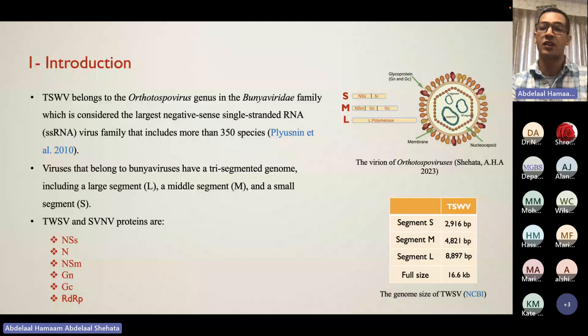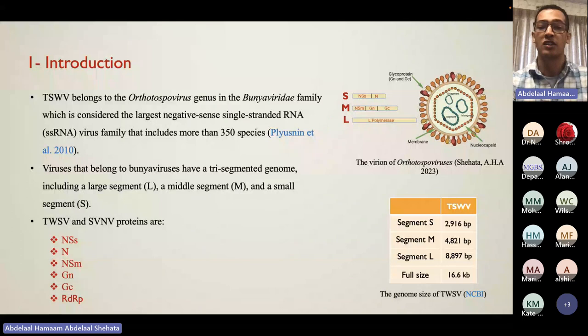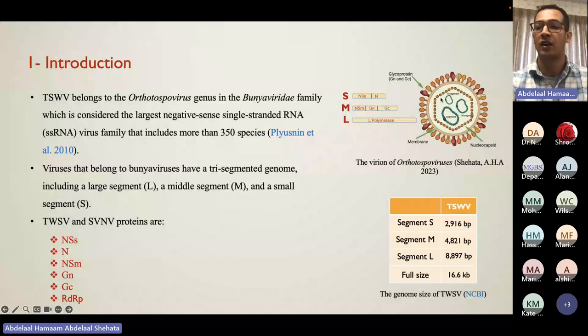This family is the biggest single-stranded RNA family, with over 350 species. The virus is composed of three segments — it's called tripartite: the small segment, the medium segment, and the large segment. The small segment has two genes: the first is the non-structural RNA silencing suppressor protein, which helps the virus suppress RNA silencing from the plant and succeed in infection. The second gene is the nucleocapsid, also found on the S-segment, and it gives the virus its icosahedral shape.